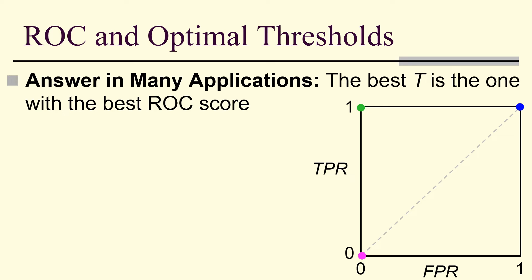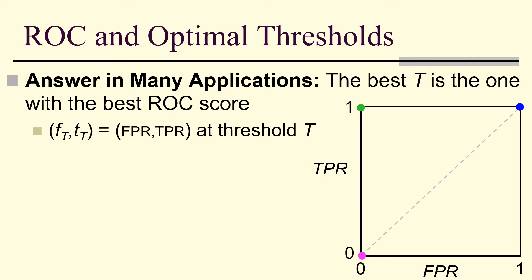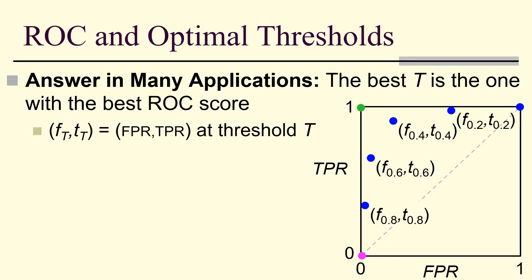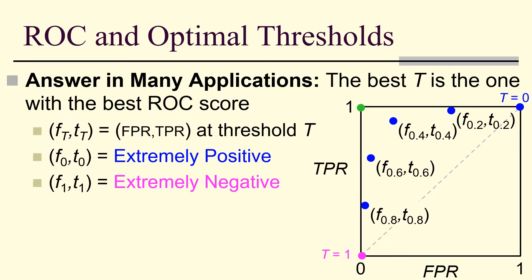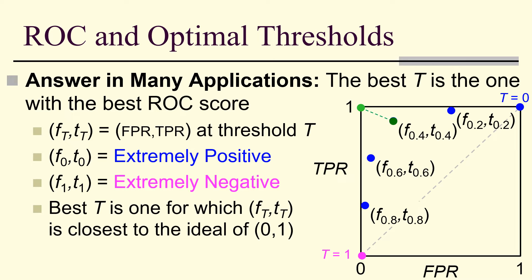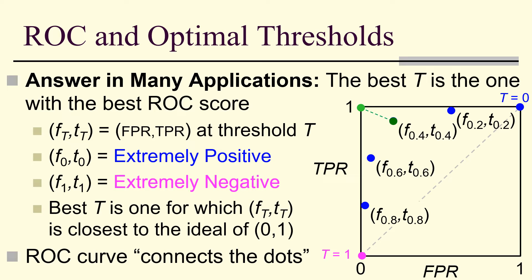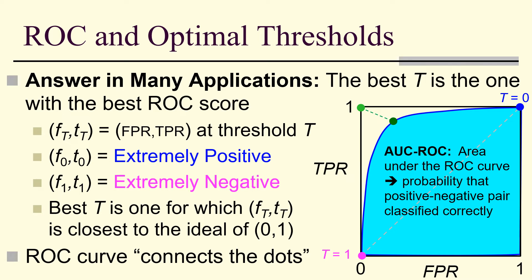The best threshold t for many applications is the one that achieves the best ROC score. Looking at points (f_t, t_t) parameterized by the actual threshold: t = 0 means everything is predicted positive (all-positive classifier), while t = 1 means nothing is labeled positive (all-negative classifier). The best t is the one closest to the ideal point (0, 1). We connect these points with a curve parameterized by the thresholds, find the area under this ROC curve, which is the probability that a positive-negative pair is classified correctly.